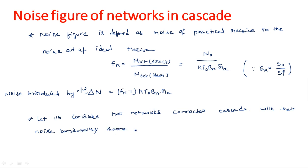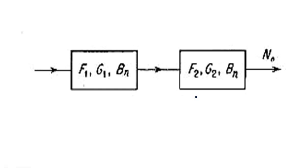The noise bandwidth is the same for both networks, but the noise figures and gains are different. The first network has noise figure F1 and available gain G1; the second network has noise figure F2 and available gain G2. The noise bandwidth Bn is the same for both. The overall noise at the output is N0.